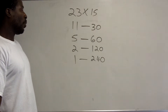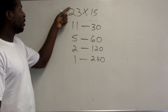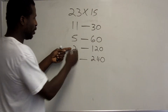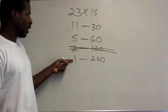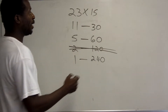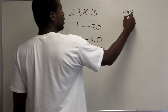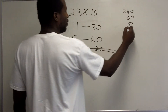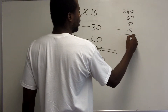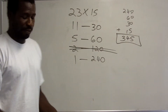After completing the duplication and mediation columns, we eliminate any row where the number on the left is even. The odd rows are kept: 23, 11, and 5 are odd so those stay; 2 is even so that row is eliminated. We then add the corresponding doubled values: 240 plus 60 plus 30 plus 15 equals 345. So 23 times 15 is 345.